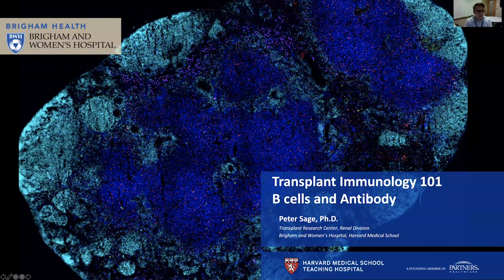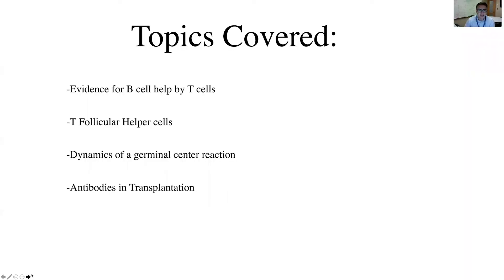I'm going to be telling you about transplant immunology 101 — B cells and antibody. I preface this by saying I'm not a transplant biologist; I'm much more a B cell person. The topics I'll cover are: evidence for B cell help by T cells, T follicular helper cells and the new understanding of how they allow B cells to produce antibody, dynamics of the germinal center reaction, and antibodies in transplantation.